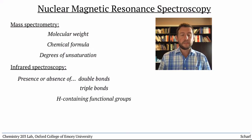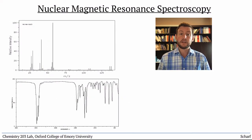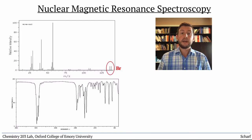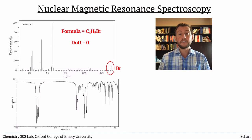But even with all that information, it's usually pretty challenging to deduce a precise chemical structure. Consider these spectra. We can tell that the compound contains bromine, and from the high resolution mass spectrum determined that it has the formula C4H9Br, and so zero degrees of unsaturation.